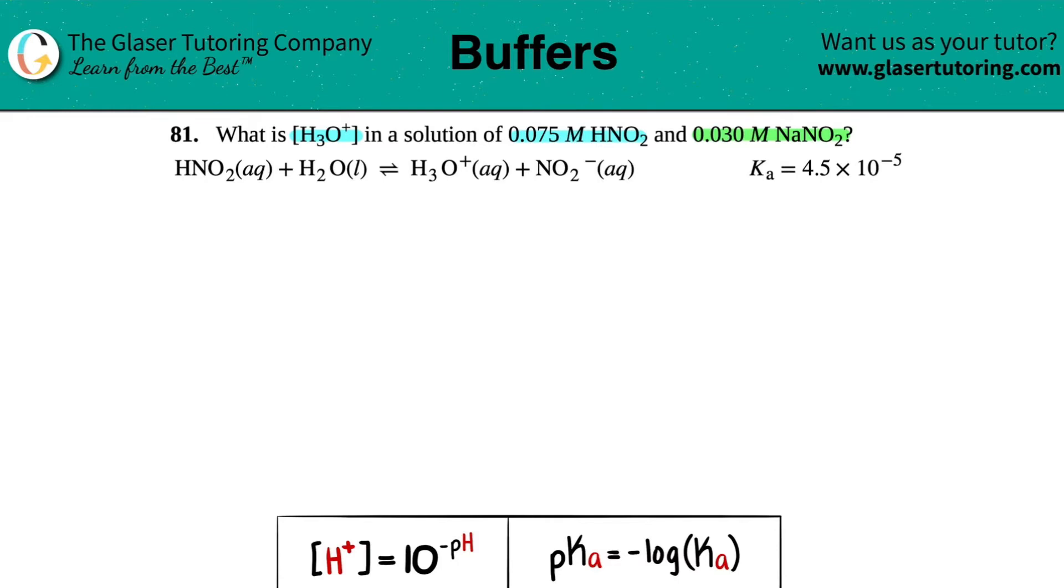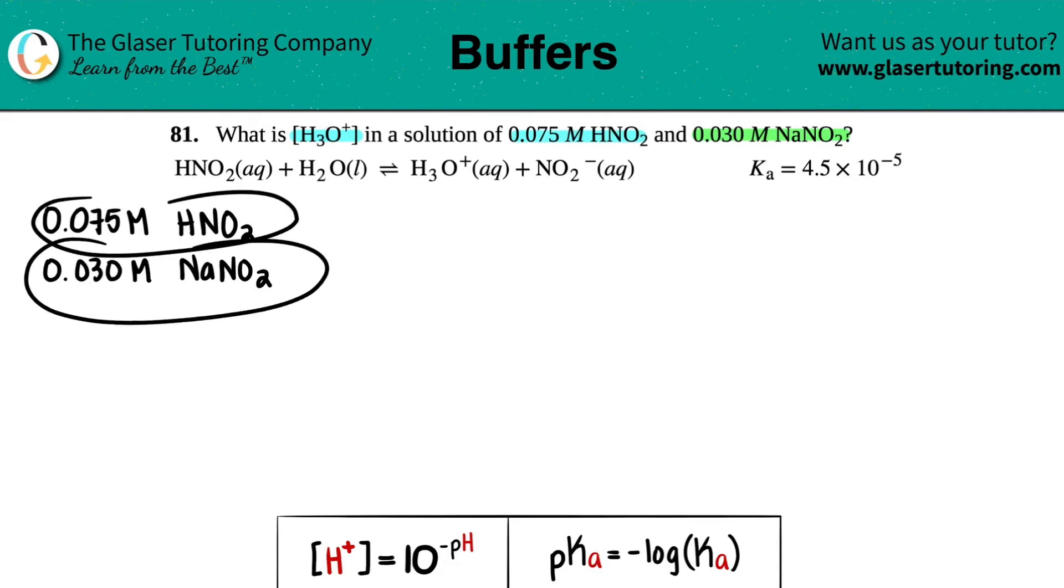Now for these, let's just write down what we're given. They gave us 0.075 molarity of HNO2 and then they gave us 0.030 molarity of NaNO2. Now usually when we see these equations, we only had one of either an acid or a base, but here now we have two of them.